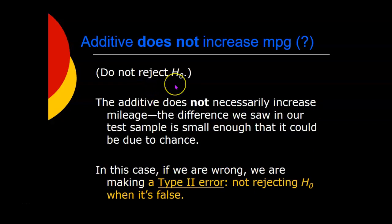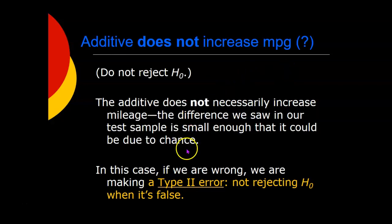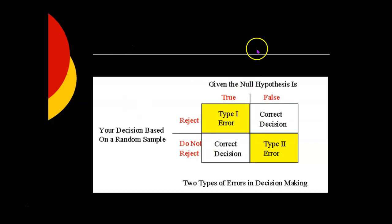And if we do not reject the null hypothesis, we say we can't be sure that this makes a difference — that wasn't enough of a difference to rule out the null hypothesis; it might just be due to random chance variation. If we say that and we are wrong — that it really does make a difference — then we're making a type 2 error. That's where you don't reject the null hypothesis when you should have rejected it because it's false. Rejecting something that's true is an error, and not rejecting something that's false is an error.